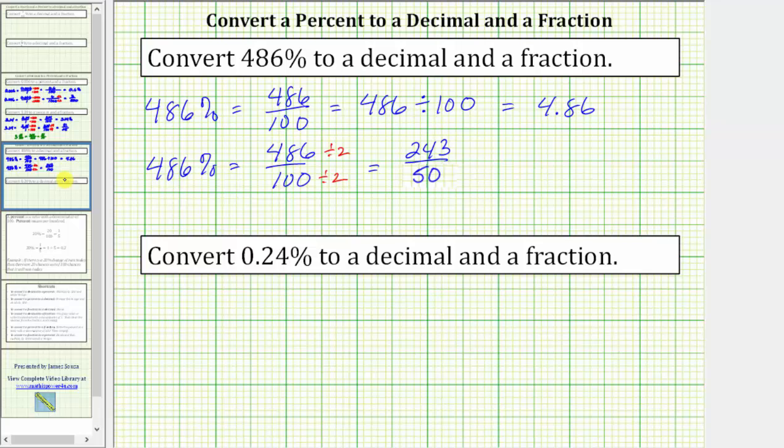Let's look at our second example. We're asked to convert 0.24% to a decimal and a fraction. What we know as a fraction, 0.24% equals 0.24 over 100. And again, because the fraction bar means division, this is equal to 0.24 divided by 100.